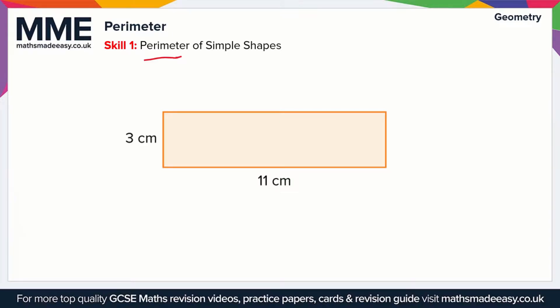The perimeter is just the distance around the edge of a 2D shape. We'll start with a basic example of a rectangle. A rectangle has two pairs of equal sides. The first pair is this side which is 3cm and the side opposite which is also 3cm. Then we have this side that's 11cm. The opposite side is also equal to 11cm.